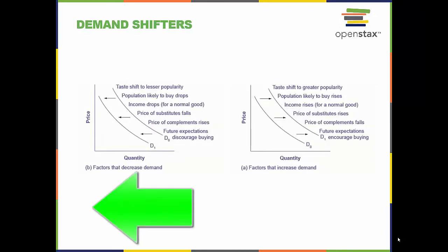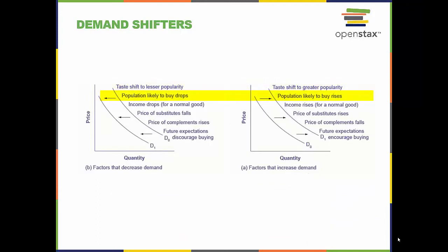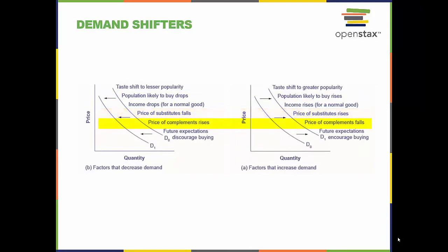Here are two lists of factors that cause either an increase or decrease in demand. The factors on the left cause a decrease in demand and shift it to the left. The factors on the right cause an increase in demand and shift it to the right. These factors include consumer tastes, population change, income change, substitutes, complements, and future expectations.